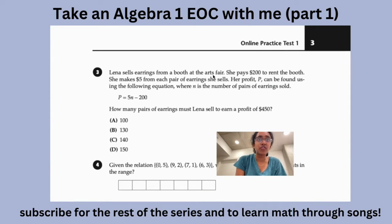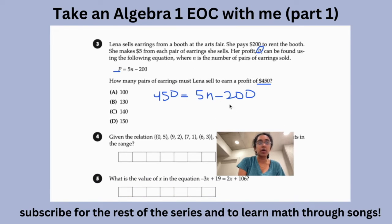Next question. Lena sells earrings from a booth at the arts fair. She pays $200 to rent the booth. She makes $5 from each pair of earrings she sells. Her profit can be found using the following equation: P equals 5N minus 200. How many pairs of earrings must Lena sell in order to earn a profit of 450? So P here clearly represents profit. So we would substitute 450 where we see P. So we would say 450 equals 5N minus 200. So here this just becomes a normal equation that you would solve. Feel free to solve this on your own as well. But you would add 200 to both sides. So you would get 650 equals 5N.